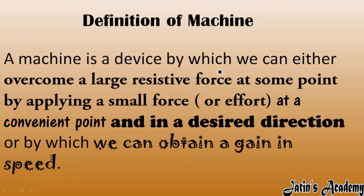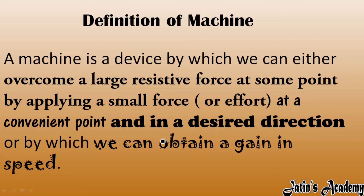A machine is a device by which we can either overcome a large resistive force at some point by applying a small force — this force applied by the human on the machine is called effort — at a convenient point where it is convenient for the human being, or apply the force in a desired direction, or by which we can obtain a gain in speed. This is the complete definition of a machine taken from its functions.